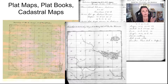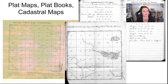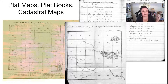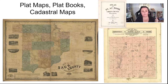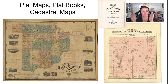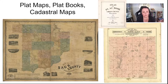Oftentimes you will hear about Platt maps or Platt books. Also, any map that has to do with land ownership can also be called a cadastral map. So you might hear the terms cadastral map, Platt map, or Platt book. These were used to give land to individual settler families. Here are some other examples of these types of maps. They would print out a book for each county showing who owned which piece of property and if there was land still available for settlement.